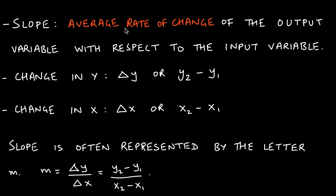The way we express this typically is the average rate of change of the output with respect to the input. Whatever change in output happens goes in the numerator, and because it's with respect to the input, whatever change in the input happens goes in the denominator.